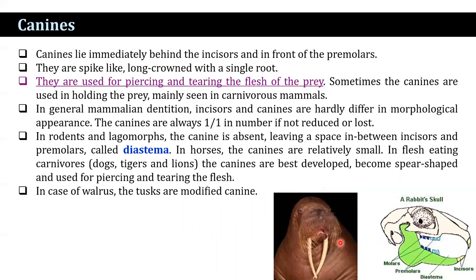Canines lie immediately behind the incisors and in front of the premolars. They are spike-like, long-crowned, with a single root, and are used for piercing and tearing the flesh of prey. Sometimes canines are used for holding the prey, mainly in carnivorous mammals. The canines are always one in number if not reduced or lost. In rodents and lagomorphs, the canine is absent, so the space between incisors and premolars is known as the diastema. In horses, canines are relatively small. In flesh-eating carnivores such as dogs, tigers, and lions, canines are best developed, become spear-shaped, and are used for piercing and tearing flesh. In walrus, the tusks are modified from the canine.